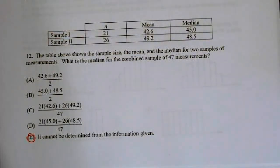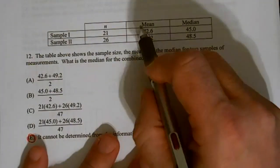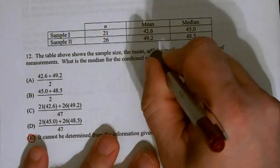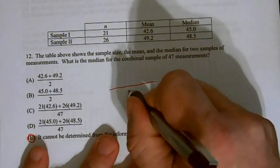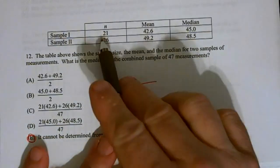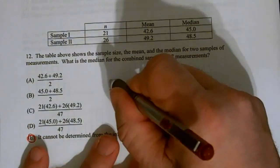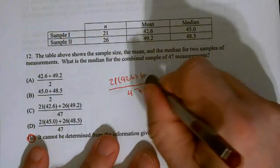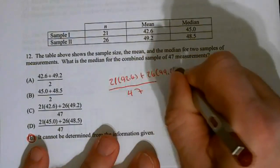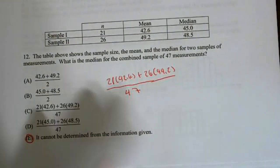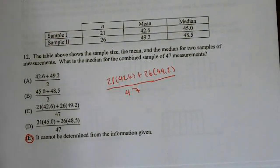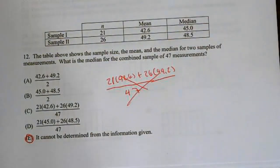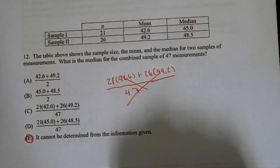So I cannot do that. It cannot be done because we don't have the information for medians. I'd have to have every single value. Now, on the mean side, we could do that. We could go, well, the mean's the weighted average and we have N1 plus N2, which means we have 47 values. So we're dividing by 47, and I need to weight them. I have 21 times 42.6 plus 26 times 49.2. So if they'd asked for the mean, I could have done it. But they didn't ask for the mean. I can't undo the median. I have to have every single value. So that one's not possible. So 12 is E. Cannot be determined.